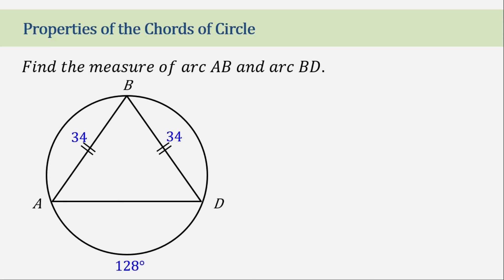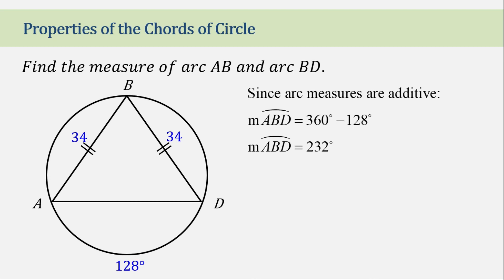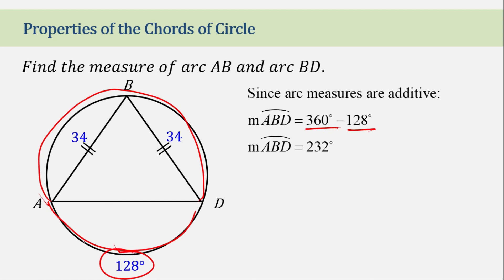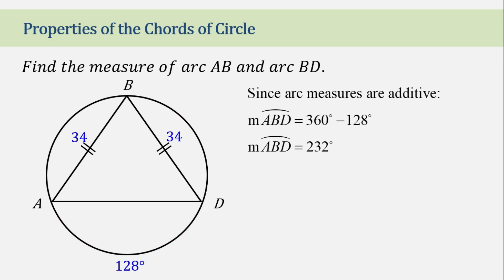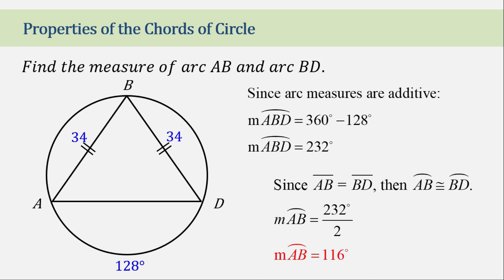Let's answer the question: find the measurement of arc AB. Since arc measures are additive, the measurement of arc ABD is 360 minus 128, which equals 232 degrees. Since chords AB and BD are equal, arcs AB and BD are equal as well. So we divide 232 by 2 and get 116 degrees for each arc.